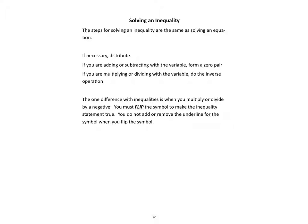There is one difference. It is when you multiply or divide by a negative — you flip the symbol to make the inequality statement true. You don't have to add or remove the underline symbol when you flip the symbol, and let me show you why this is true.